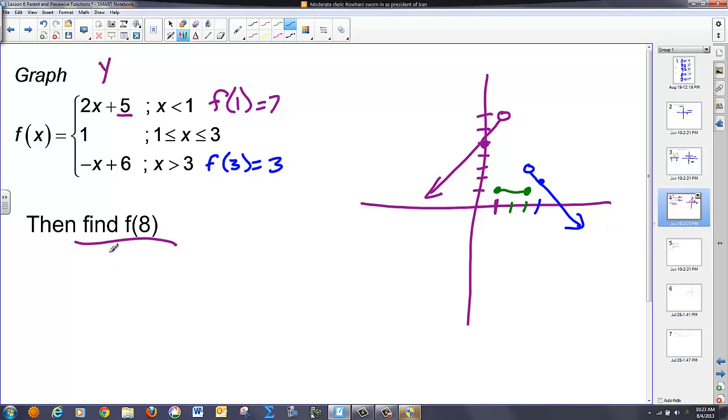Lastly, we want to evaluate this function when x is equal to 8. So I look up here, and I have three different equations I can plug this into. But the only one it makes sense for is this third one, because this third equation applies to all x values greater than or equal to 3, and 8 is greater than or equal to 3. So f of 8 is equal to negative 8 plus 6 for negative 2.